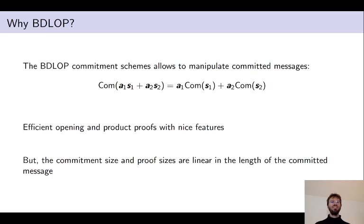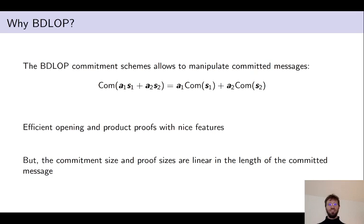One of the reasons for the linear scaling of our proof system is that we use the BDLOP commitment scheme. The linear scaling comes from the fact that BDLOP scales linearly in the length of the message, so since you need to output the commitment, the proofs are also linear.